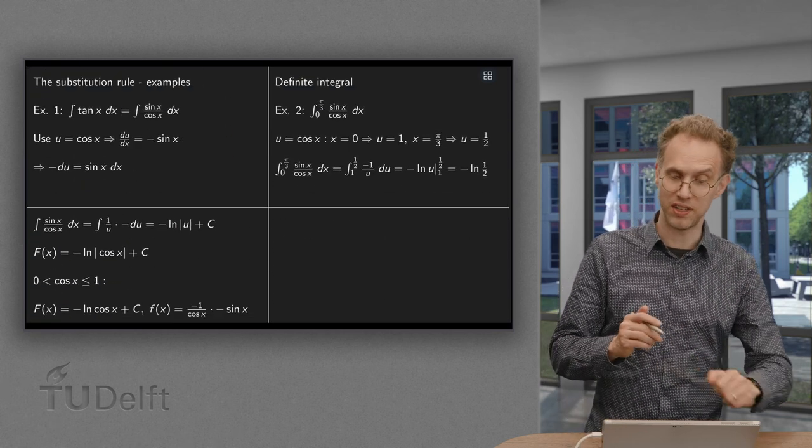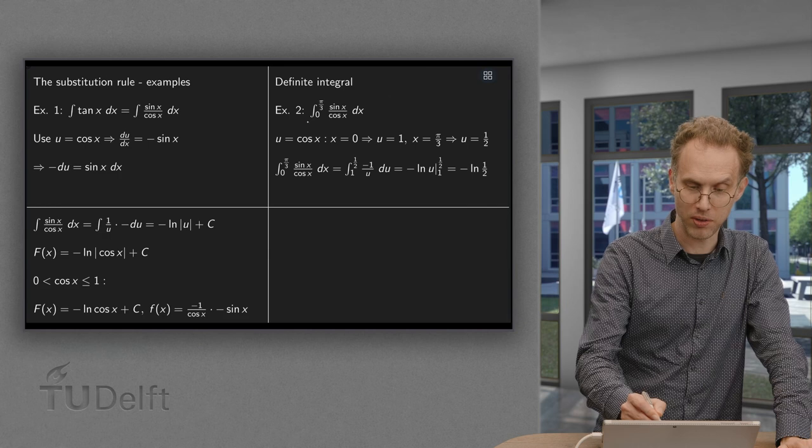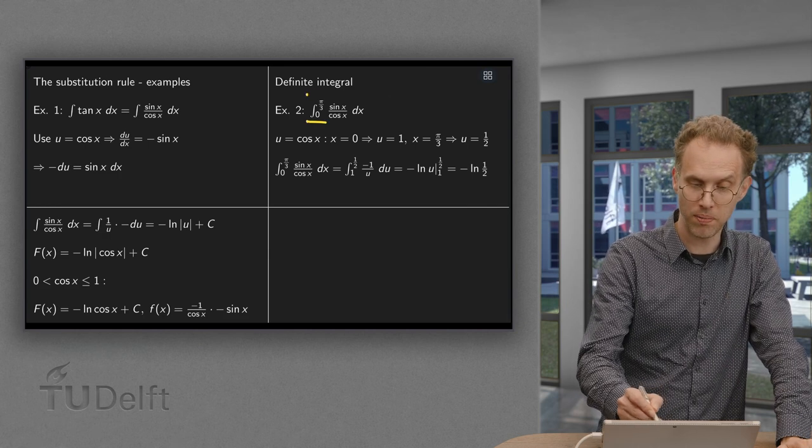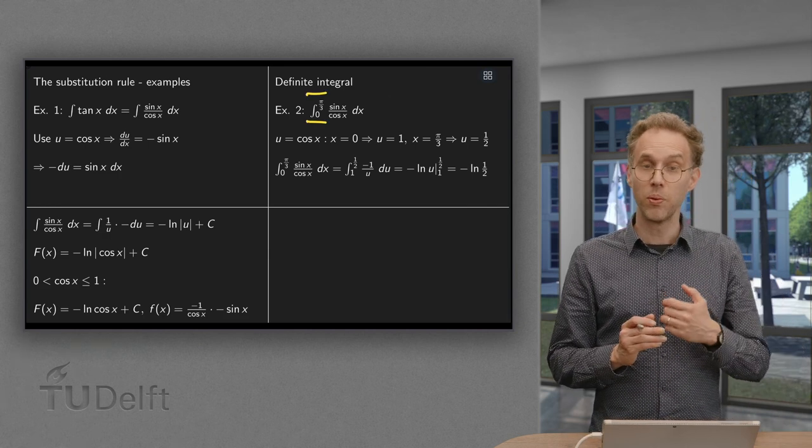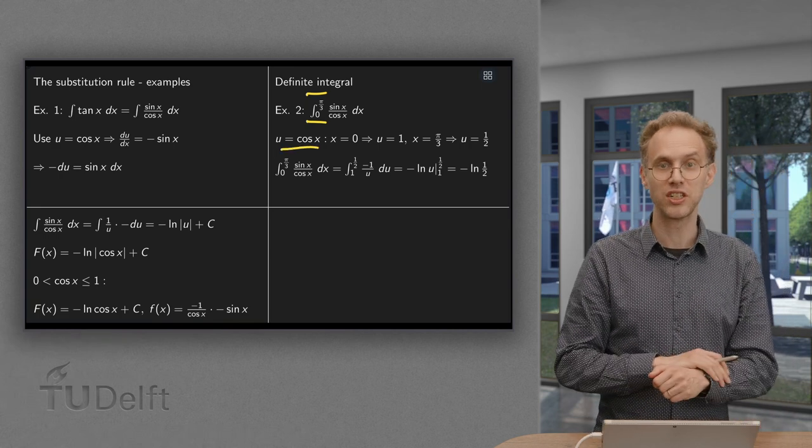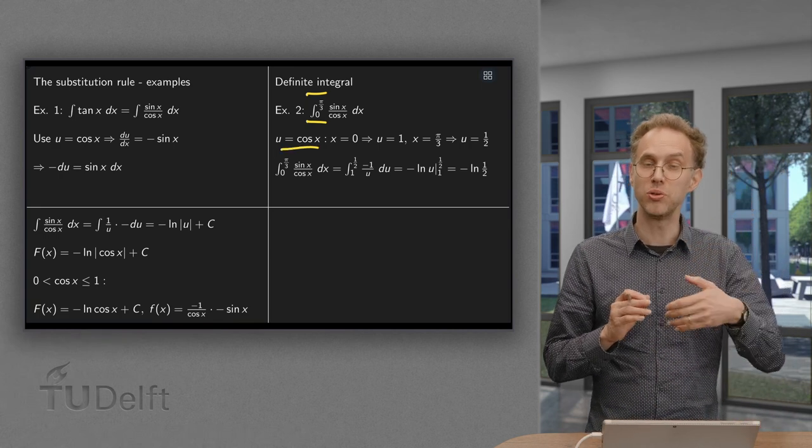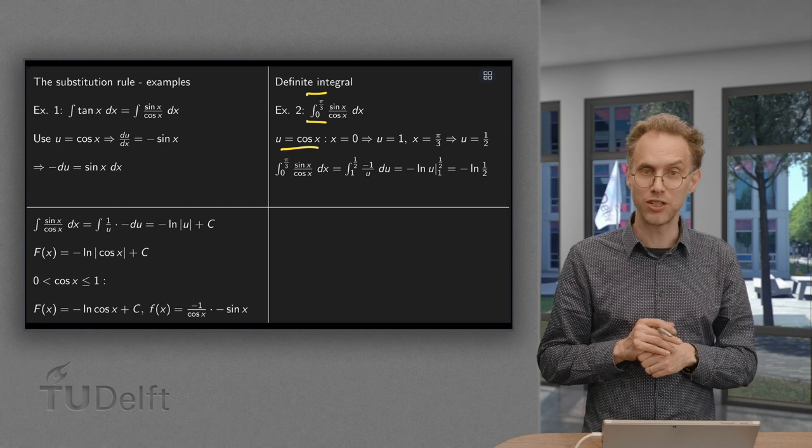What happens if we have definite integrals? So if we have boundaries, say, from 0 to π/3. Well, if we do substitution u equals cosine of x, we can also include the boundaries in the substitution.